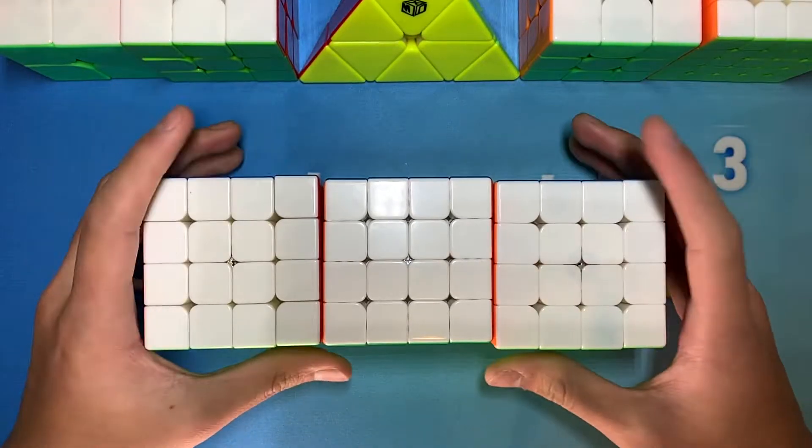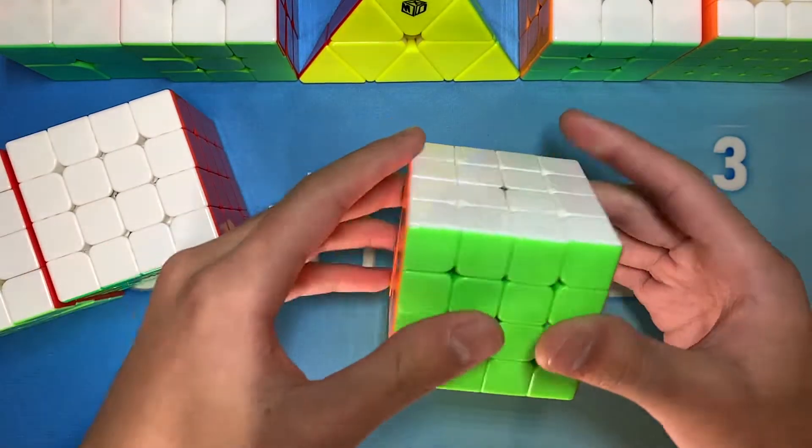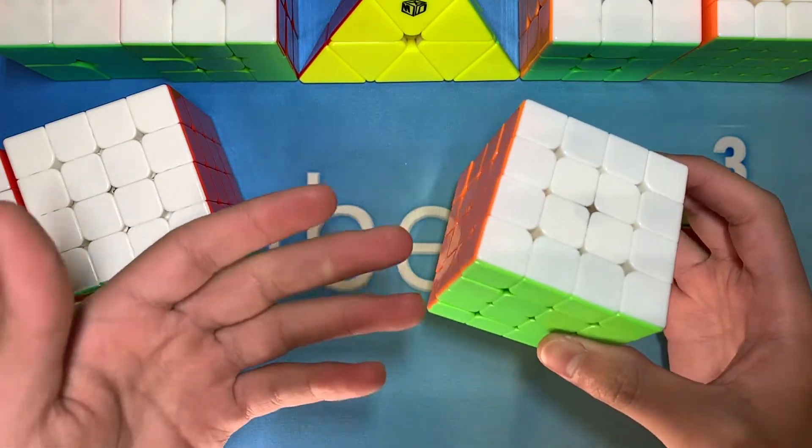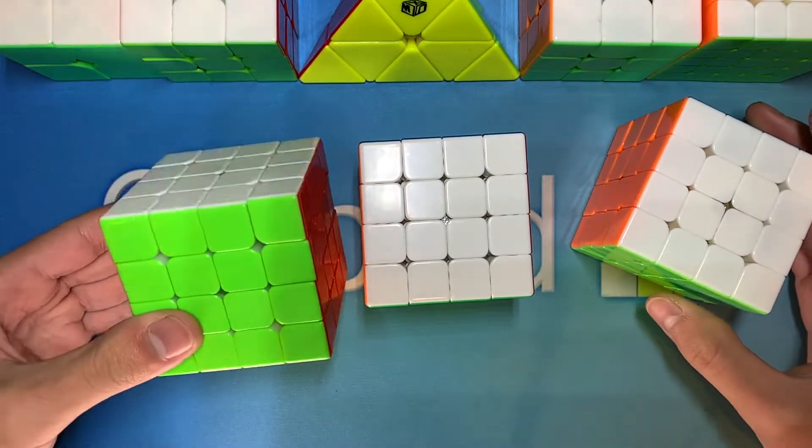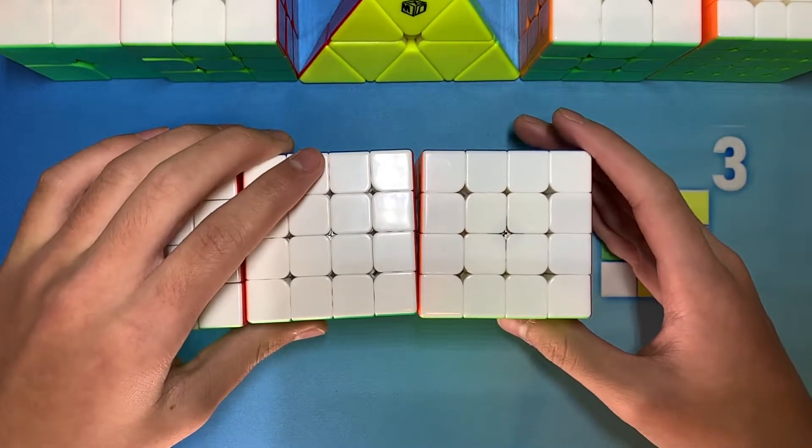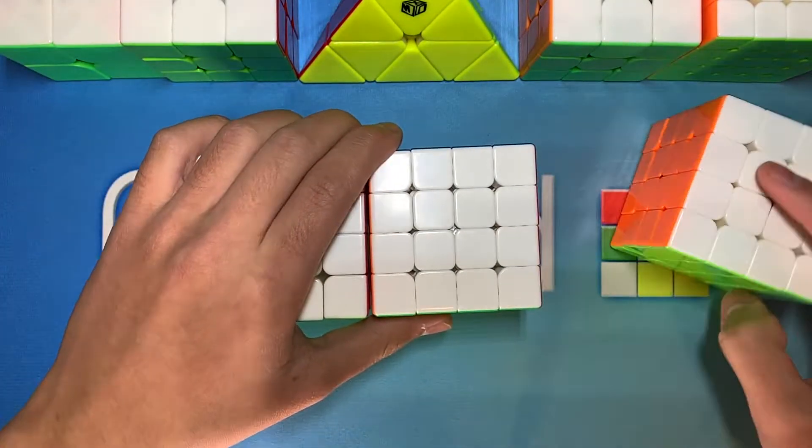For 4x4, as you can see I actually have 3 cubes lined up here, and the one that I will most likely be using is actually the Mini Wuhua M. I know this is probably surprising, as these two cubes, the Valk 4M and the Mystic Aosu WRM, are much newer compared to the Mini Wuhua, but I do have reasons as to why I'm not using these two cubes.